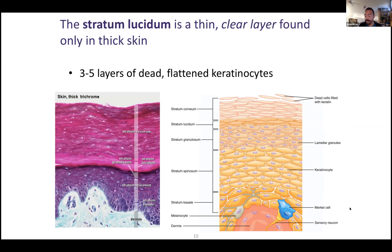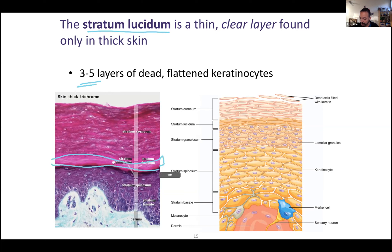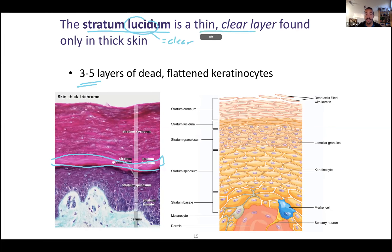If it's thick skin, then we have stratum lucidum. Stratum lucidum is just a very thin layer — only three to five layers of cells. It's lighter colored; the word lucid means more clear. It's a thin, clear layer found only in thick skin. At this point the cells are dead — flattened, dead keratinocytes.